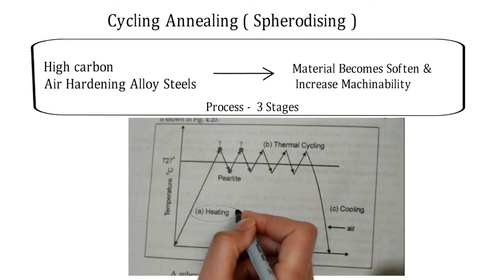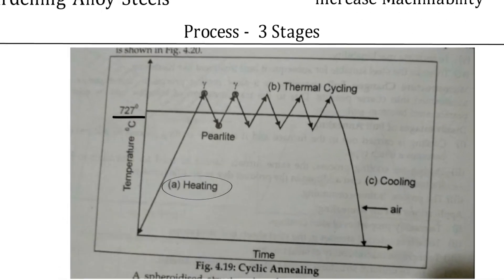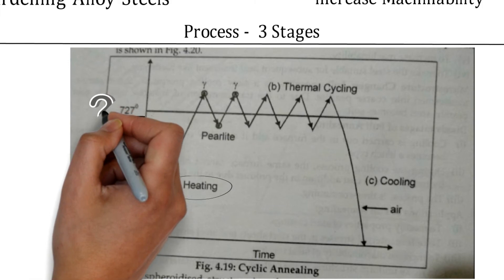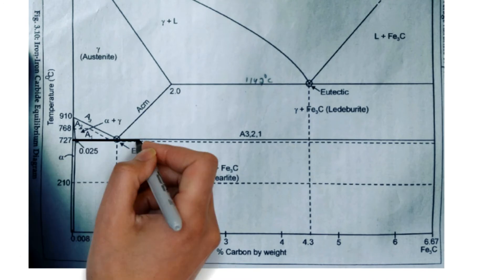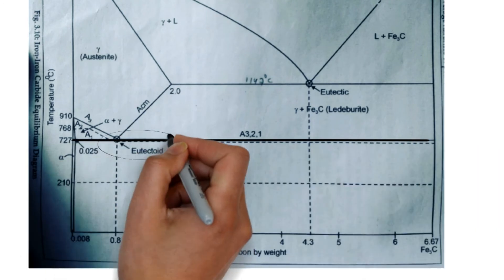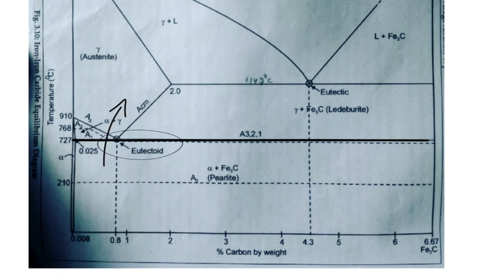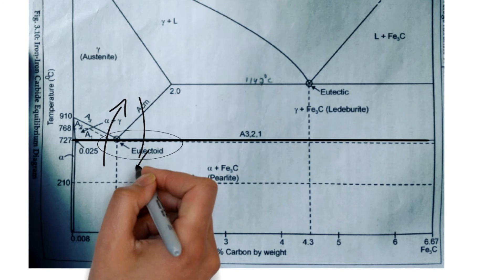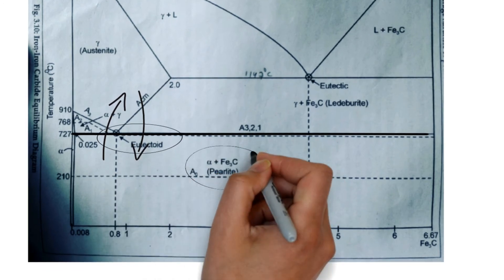The cyclic annealing process has three stages: heating, thermal cycling, and cooling. In the heating stage, the material is heated up to 727 degrees Celsius. In the iron carbide equilibrium diagram, the 727°C line represents the eutectoid transformation — the eutectoid point. Above that point we get austenite (gamma structure), and below it we get pearlite, which is alpha iron plus cementite structure.